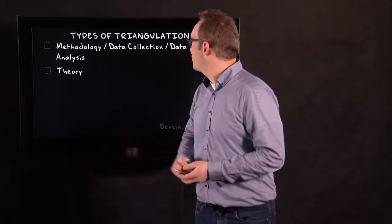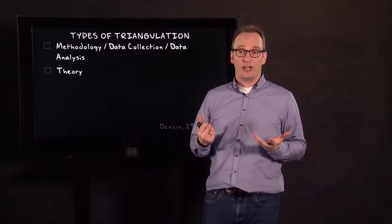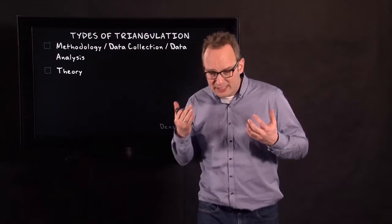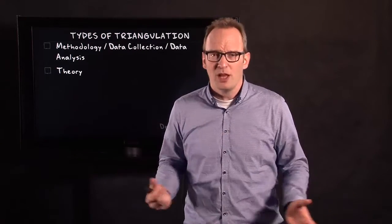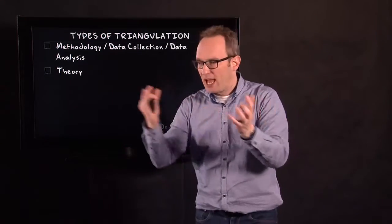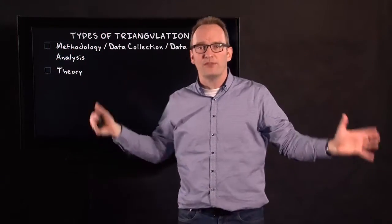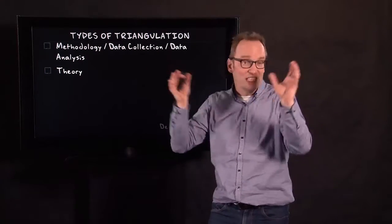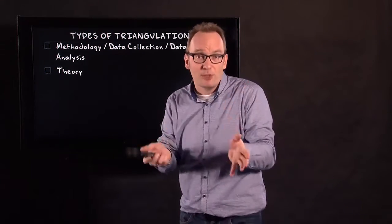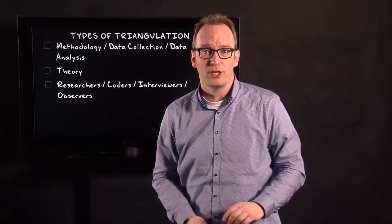The second type of triangulation is triangulation by theory. And this is what we do all the time. We compare theories and then we try to fit our research problem in this whole range of different theories. Sometimes we test multiple theories and sometimes we simply use multiple theories.